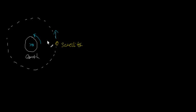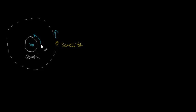What does that mean, if you think about it? That means that if the earth rotates by a certain angle — like the earth rotates by 90 degrees from here to here — so the satellite rotates by 90 degrees from there to there.